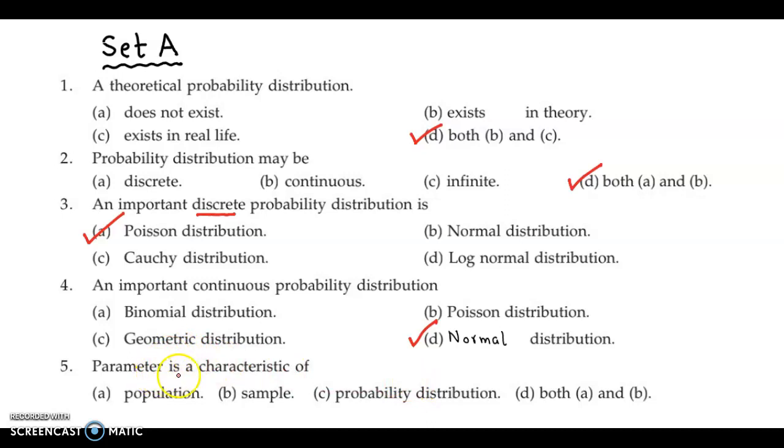Next, parameter is a characteristic of. Now any characteristic related to population is termed as a parameter. Hence the answer is option A, population. So parameter is a characteristic of population. Thank you.